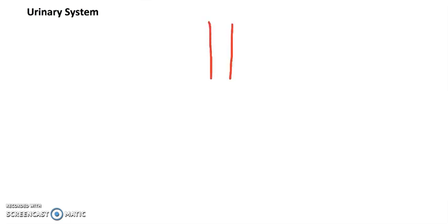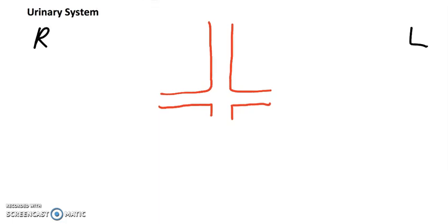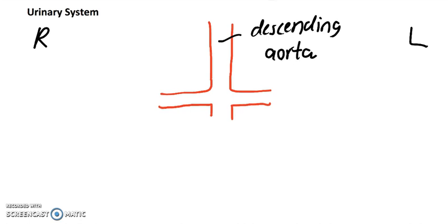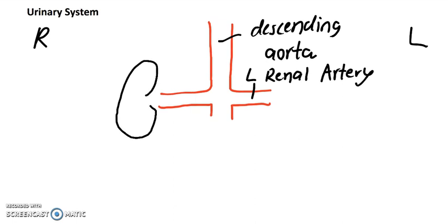Let's do an overview of our urinary system. The descending aorta brings blood to the kidney via the first branching called the renal arteries, and then it continues down. This is the left side and this is the right side. Here is the descending aorta, and here would be the left renal artery. We call these the renal arteries because they bring oxygenated blood to the kidney.